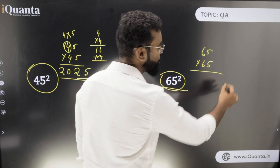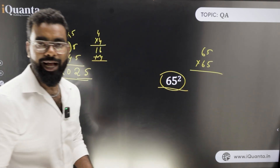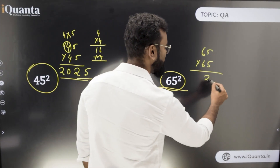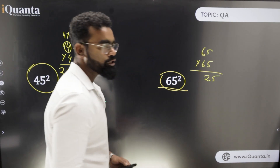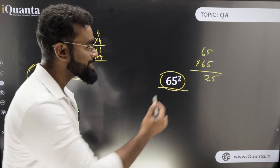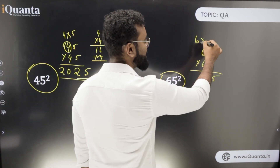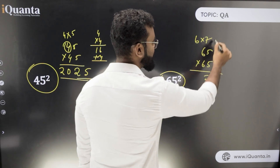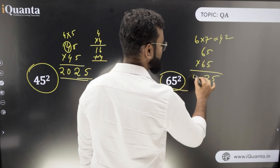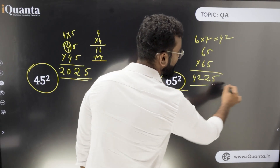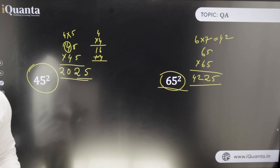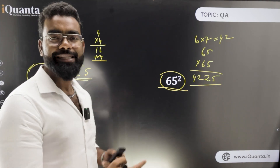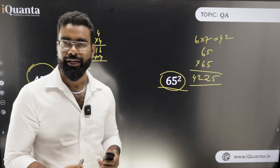Next, 65 squared. As discussed, the last two digits are always 25. The first part is 6 × 7 = 42. So the answer is 4225. That is how you handle squaring any number ending in 5.